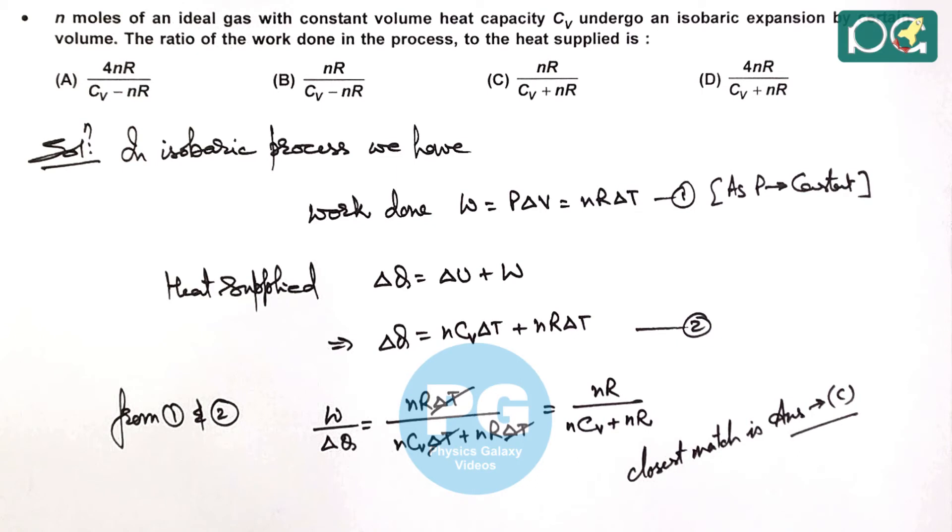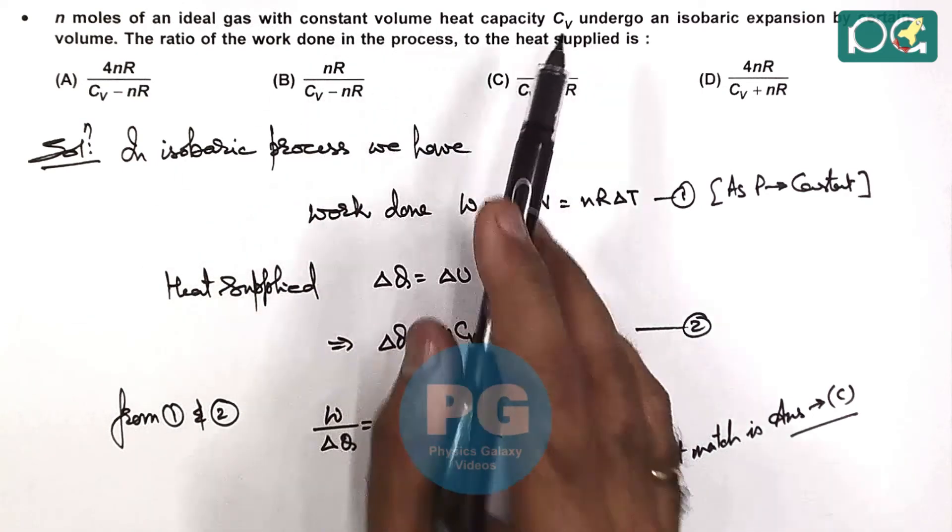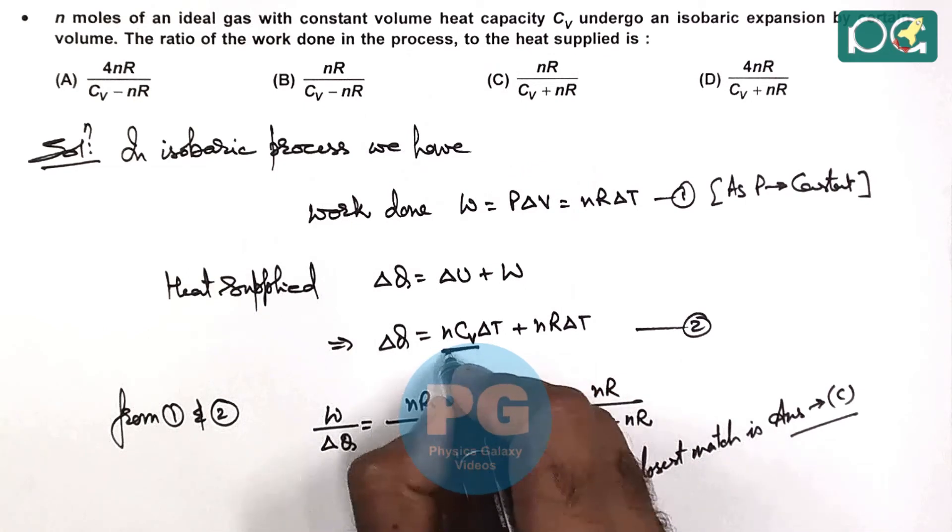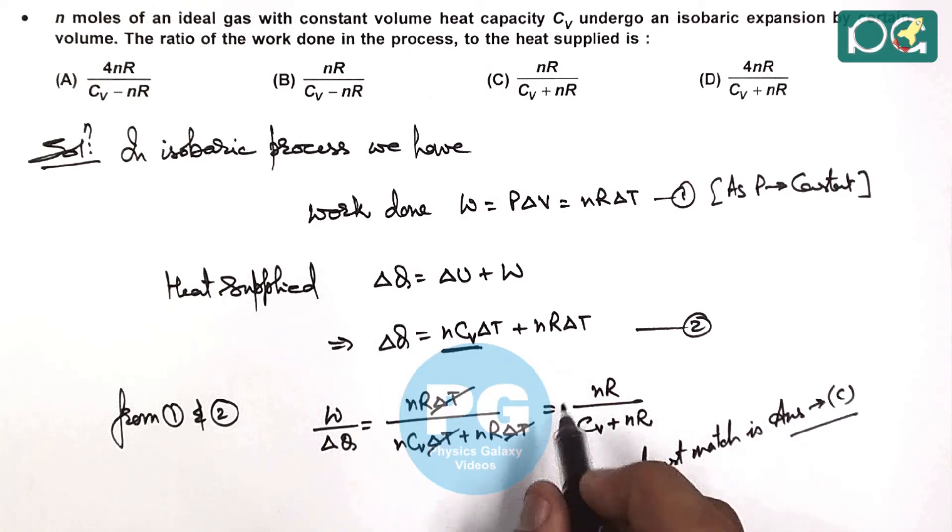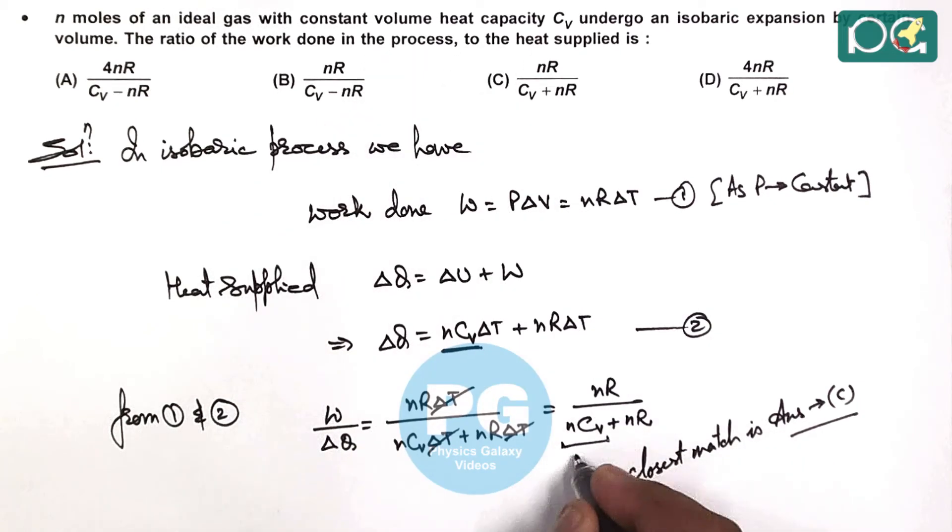One thing we can see in the question is that it's given as constant volume heat capacity. We have taken Cv as molar heat capacity, that's why nCv is used. If we talk about constant volume heat capacity, then nCv can be replaced with Cv.